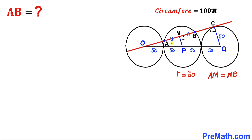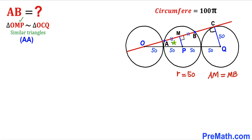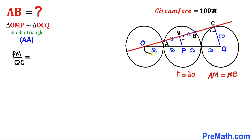Now focus on two right triangles: the small triangle OMP and the large triangle OCQ. These two triangles are similar by the Angle-Angle similarity theorem — they share angle O, and both have a 90-degree angle. So we set up the proportion: PM divided by QC equals OP divided by OQ.